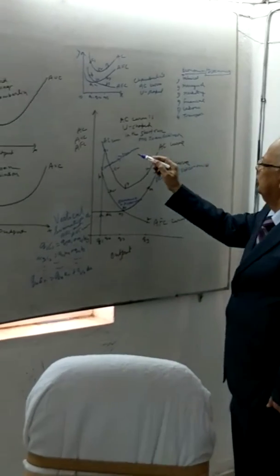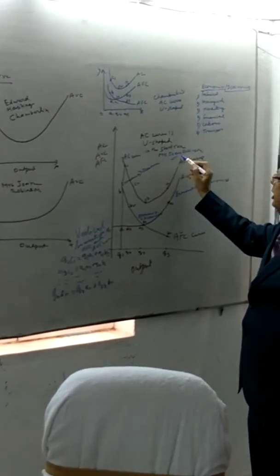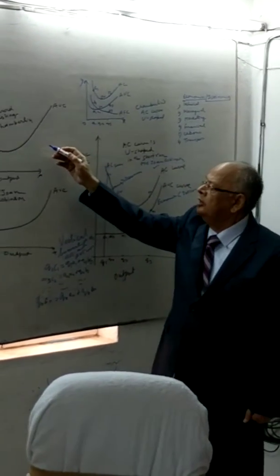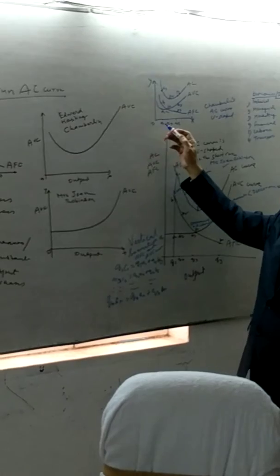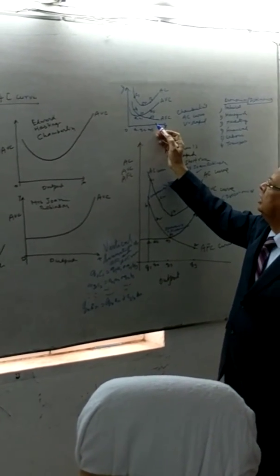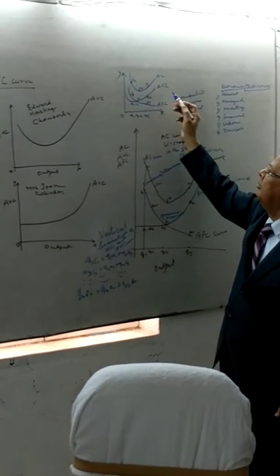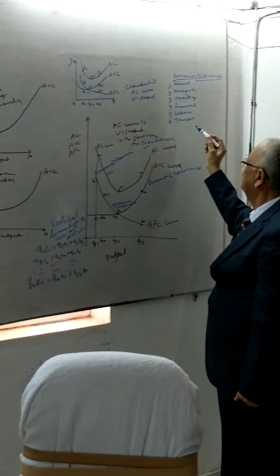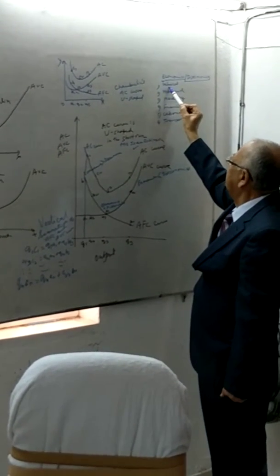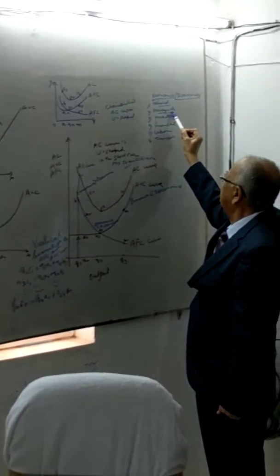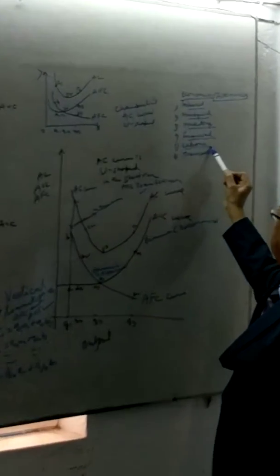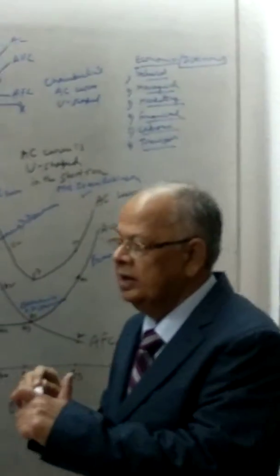We get a U-shaped cost curve according to Joan Robinson. If we take Chamberlin's average variable cost and average fixed cost, then by the same technique, we will derive the U-shaped average cost curve. The reasons behind it include technical economies, managerial economies, marketing economies, financial economies, labour economies, and transport economies — and these are later converted into diseconomies.